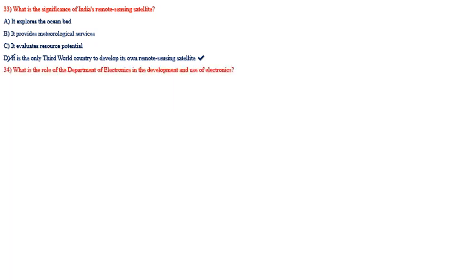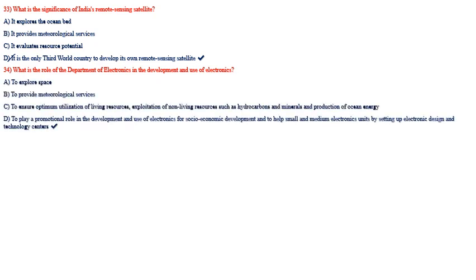What is the role of the Department of Electronics in the development and use of electronics? Options: to explore space; to provide meteorological services; to ensure optimum utilization of living resources and exploitation of non-living resources. The correct option is to play a promotional role in the development and use of electronics for socio-economic development and to develop small and medium electronics units by setting up electronic design and technology centers.